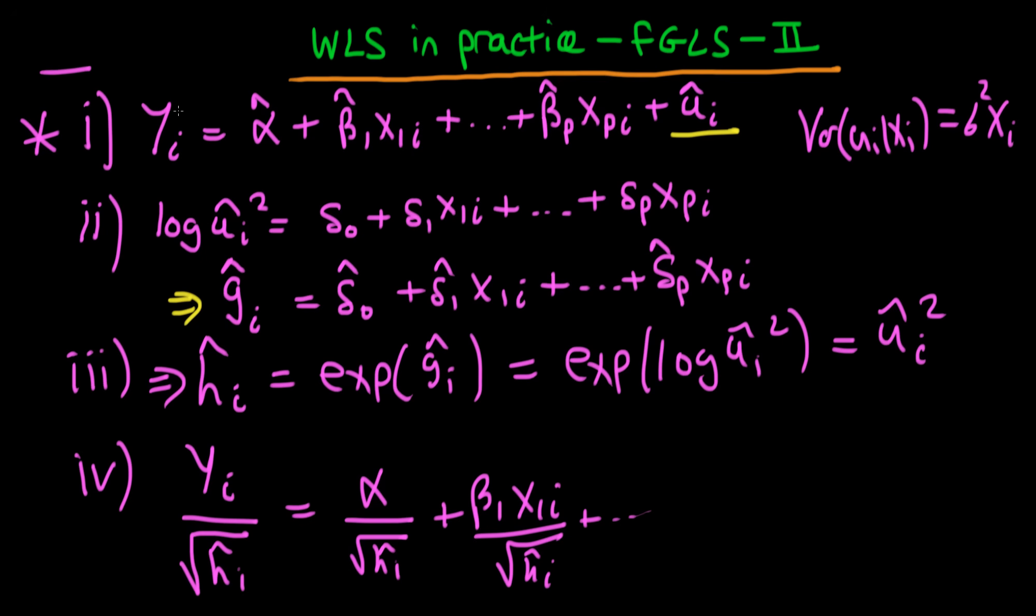So what are the various properties that feasible generalized least squares have? Because remember we talked about generalized least squares—if we actually know the explicit form of the variance it turns out that it's BLUE. But here we don't actually know the variance so we have to estimate the variance,